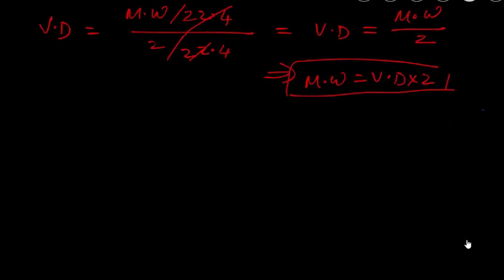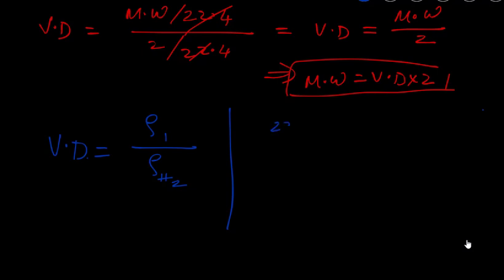Let's revisit: vapor density = density of gas 1 over density of hydrogen. Taking oxygen as an example, oxygen has a volume of 22.4 liters — you can take any volume, but we'll keep 22.4 as our reference volume.